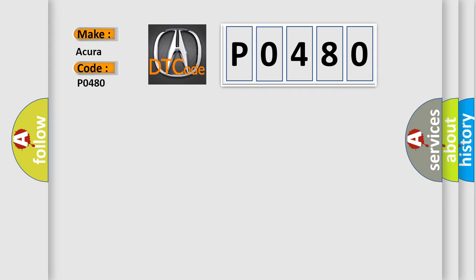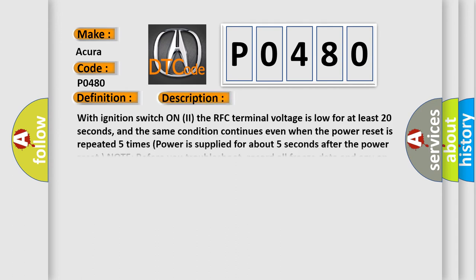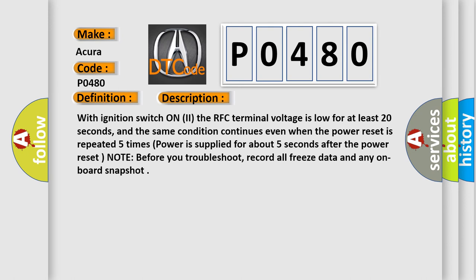The basic definition, for a range of car manufacturers, is radiator fan control (RFC) system malfunction. With ignition switch on, the RFC terminal voltage is low for at least 20 seconds, and the same condition continues even when the power reset is repeated — five times power is supplied for about five seconds after the power reset. Before you troubleshoot, record all freeze data and any onboard snapshot.